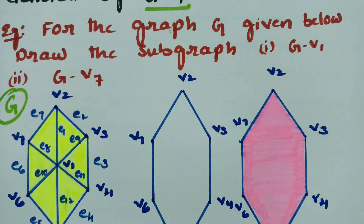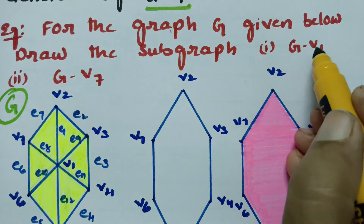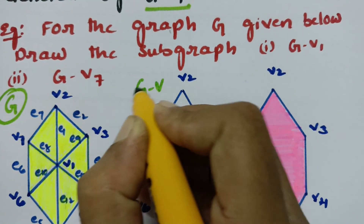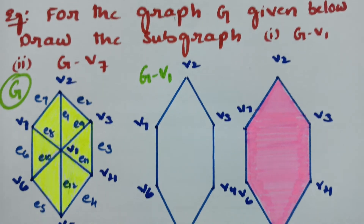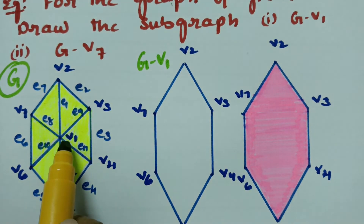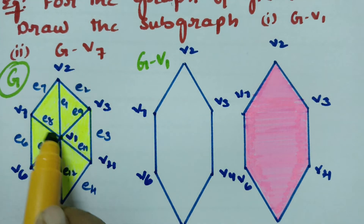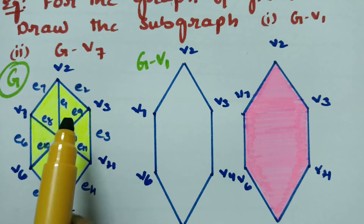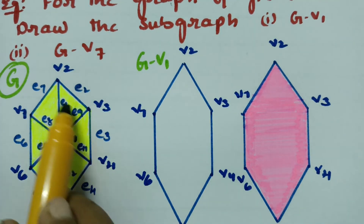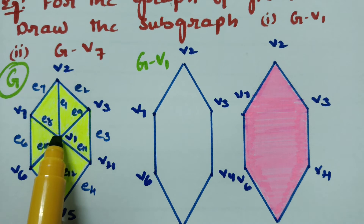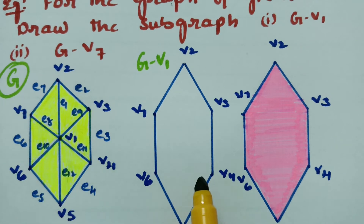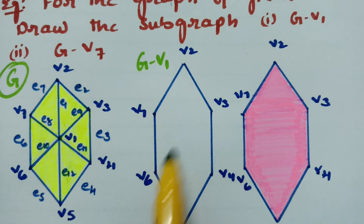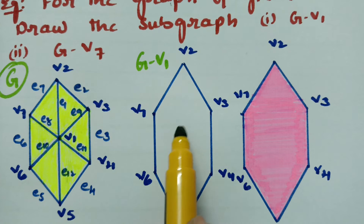Now, I want to remove vertex V1 — so this is G minus V1. Before removing V1, I have to remove all the edges which are incident with V1. There are 6 such edges. I have to remove all the edges incident with V1, and the fresh graph which is formed is called the vertex deleted subgraph.